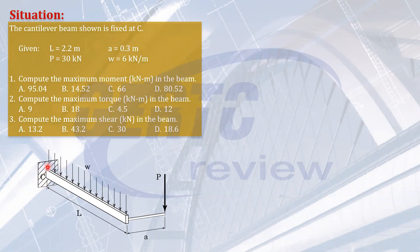As you can see, this is a cantilever beam perpendicular to the wall. The length of the beam is 2.2 meters. The concentrated load P = 30 kN is applied at a distance a = 0.3 meters perpendicular to the length, and the uniform load is w = 6 kilonewtons per meter. We will just neglect the weight of this bar supporting P.